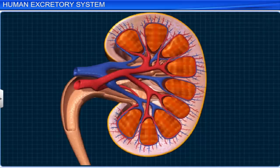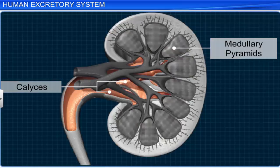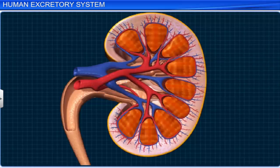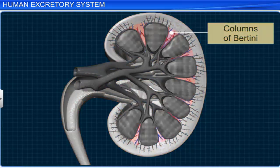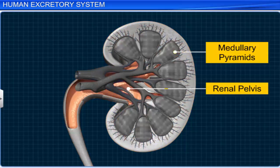There are about 8 to 18 cone-shaped structures in the medulla called medullary pyramids, which project into the calyces. The tip of each medullary pyramid is called a papilla. The cortex protrudes or extends between the pyramids as renal columns called the columns of Bertini. The medullary pyramids project into the calyces, which lead to a wide funnel-shaped space called the renal pelvis.